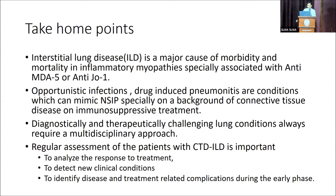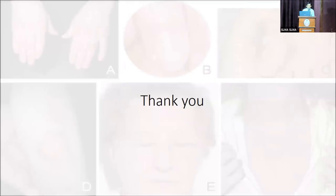Take-home points: Interstitial lung disease associated with polymyositis and dermatomyositis is a major cause for morbidity and mortality, especially when the disease is associated with anti-MDA5 or anti-Jo-1 antibodies. When thinking of NSIP or any connective tissue lung involvement, always consider opportunistic infections and drug-induced pneumonitis. For diagnostic and therapeutic challenging lung conditions, always go with a multidisciplinary approach. Regular assessment of patients with CTD-ILD is very important to analyze treatment response, detect new clinical conditions, and identify disease- and treatment-related complications.